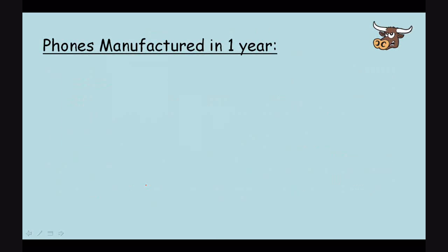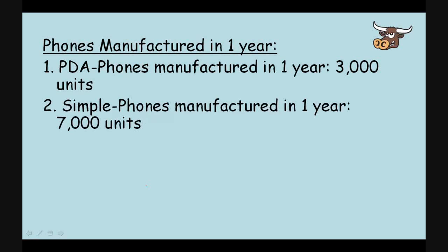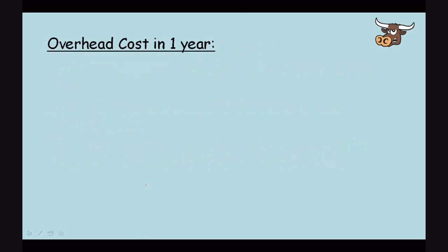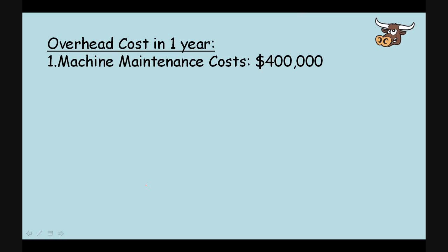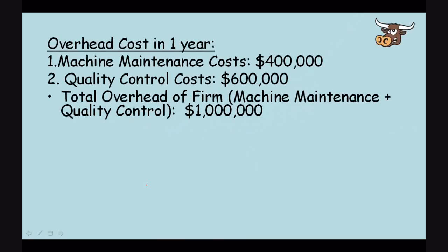Let's look at the phones manufactured in one year. For the PDA phones, there were 3,000 units manufactured. For the simple phones, there were 7,000 units manufactured. That makes a total of 10,000 units all in all. Now let's look at the overhead costs in one year. There were machine maintenance costs of $400,000 and quality control costs of $600,000, making the total overhead of the firm $1,000,000.